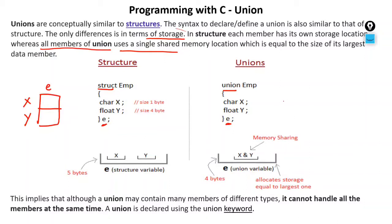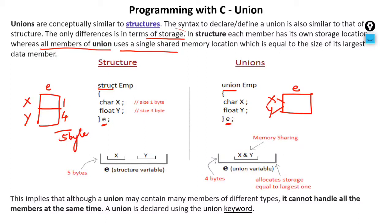When you create a variable of a Union, only one block is created, and X and Y both share the same memory space. The size of that block is equal to the size of the largest member. For example, if a character is 1 byte and a float is 4 bytes, the total size of the Union variable E would be 4 bytes — it takes the largest size among its members.